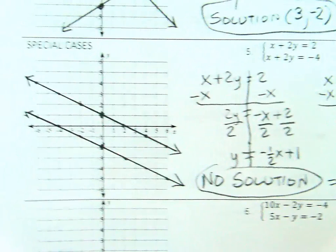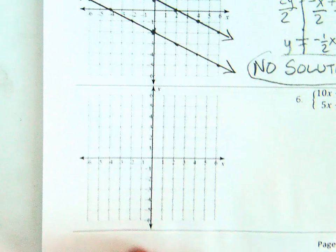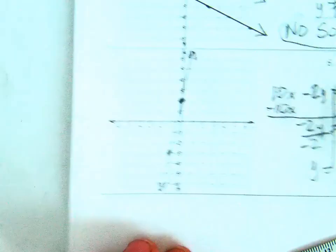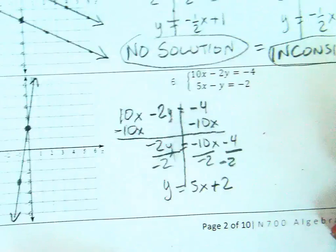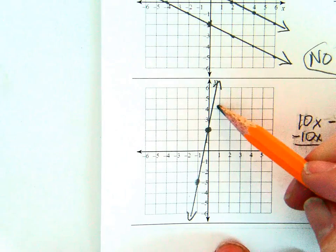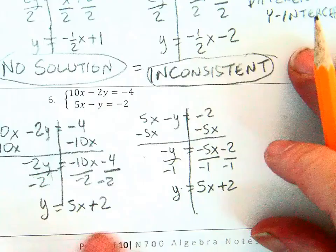There's one other special case to look at and that's when both lines turn out to be the same line. In this case there are infinite solutions. These two equations, when simplified, turned out to be equivalent. They graph as the same line. Thus all of their solutions are the same.